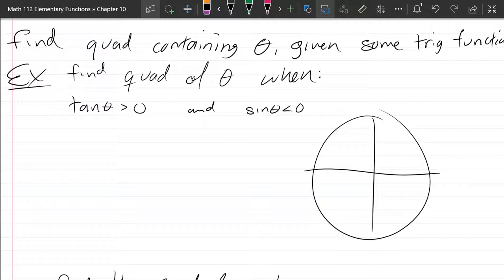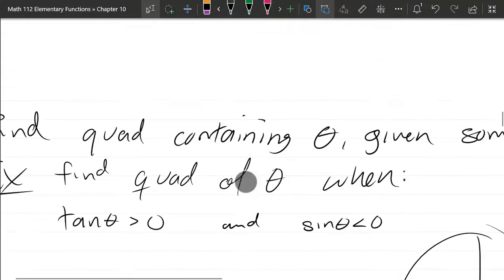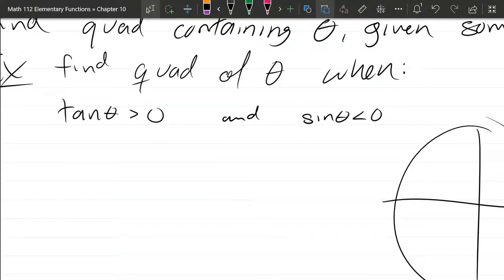So you need two trig functions in order to figure out precisely what quadrant the angle's in. They can't both be related to just x or just y values. So in this case, we got a sine and a tangent.